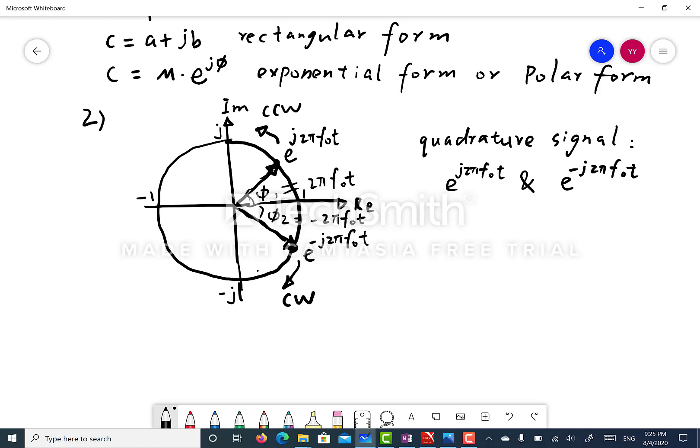As t increases, theta 2 becomes more negative, and this quadrature signal goes around in the clockwise direction.